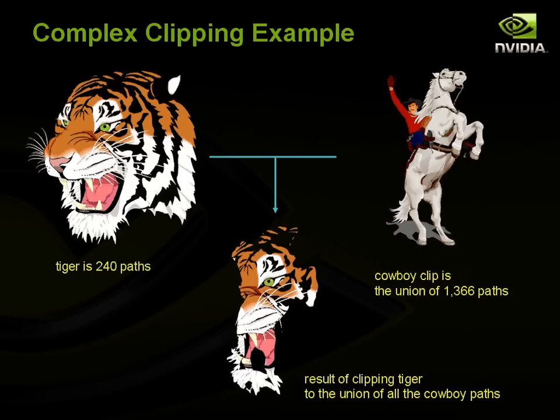I'm going to stop here, and in part four we'll resume talking about some of the programmable shading that we can do with NV path rendering.